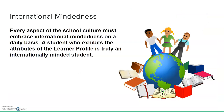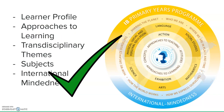A student who exhibits the attributes of the learner profile is truly an internationally minded student. Attributes like principled, caring, open-minded, and communicator enable them to become internationally minded. Looking at this diagram now, you can see the IB learner profile at the center, the approaches to learning supporting it, the subjects, the transdisciplinary themes, and ultimately internationally minded students. I hope that's helped you understand this fantastic education system. If you liked it, please click like, and if you have any questions feel free to leave them. Thank you.